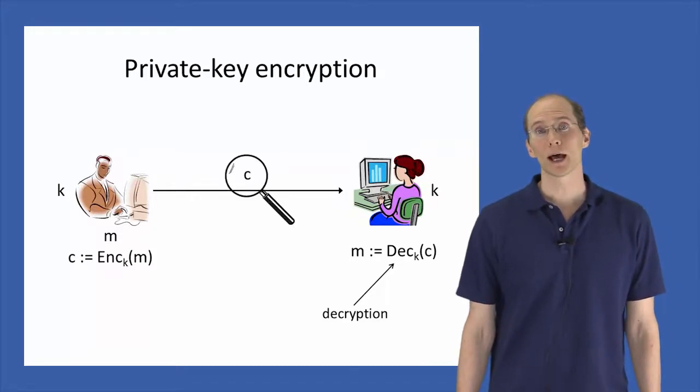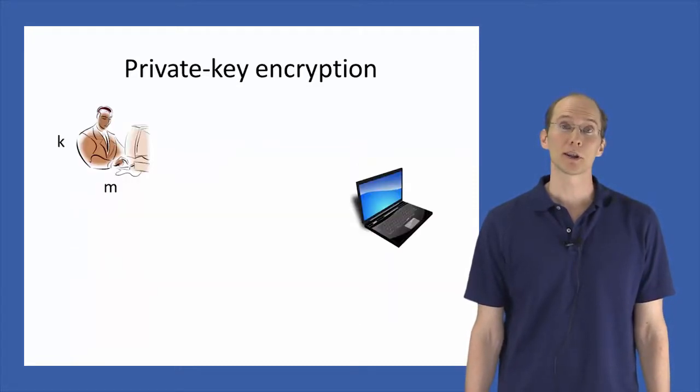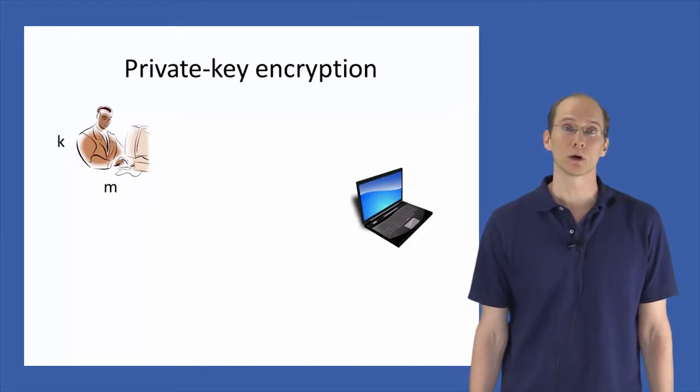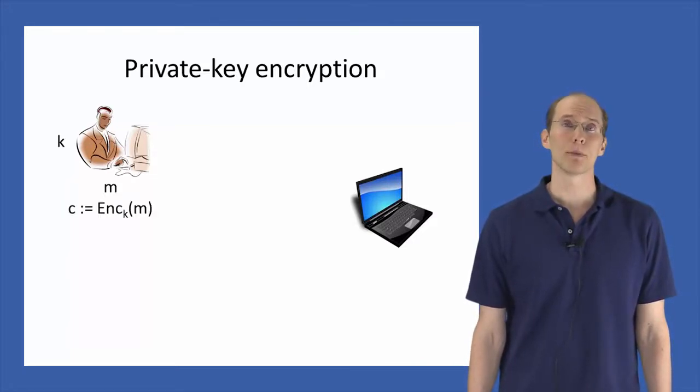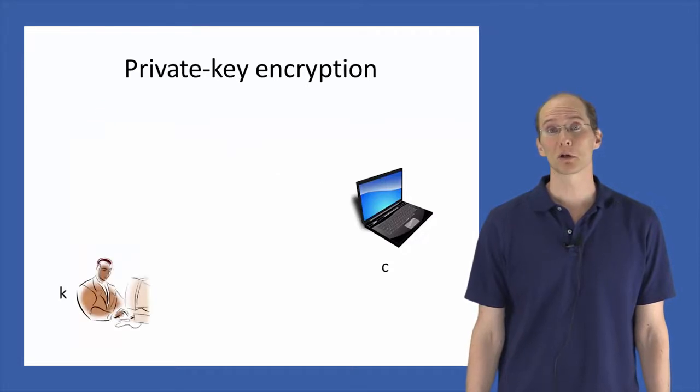On the previous slide, we had two distinct users separated in space. Private key cryptography is also commonly used for ensuring secrecy for a single user communicating with himself, as it were, over time. Here, Bob holds a message that he wants to store safely on his laptop. As before, Bob can encrypt the message to obtain a ciphertext and now store that ciphertext on his laptop. At some later point in time, when Bob wants to recover the message, he can read the ciphertext from the hard drive and then decrypt it using his key to recover the original message.